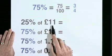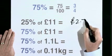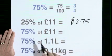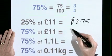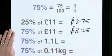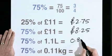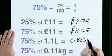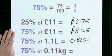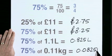25% of 11 pounds is 2 pounds 75, so 75% must be three times more: 8 pounds 25. 75% of 1.1 litres is 0.825 litres. 75% of 0.11 kilograms is 0.025 kilograms.